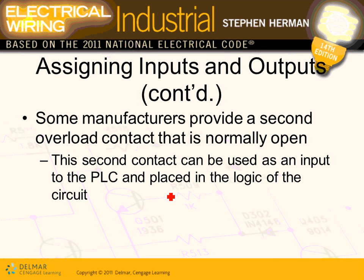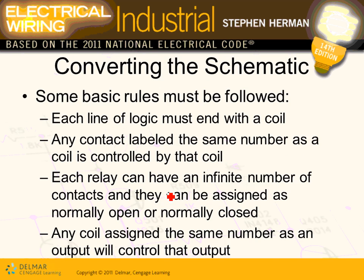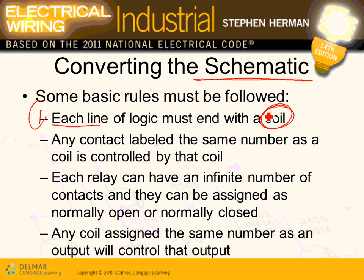When you do the schematics, here's the rule — rule number one: each line must end up with a coil. A coil is a load. If you just take contacts between L1 and L2 with no coil, you know what you're going to have? A short circuit. You have to end up with a coil.